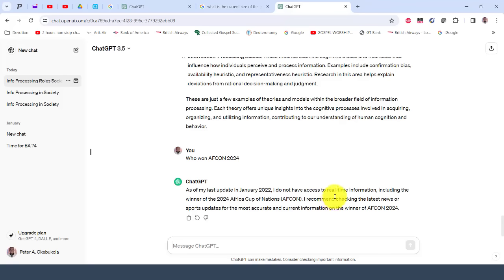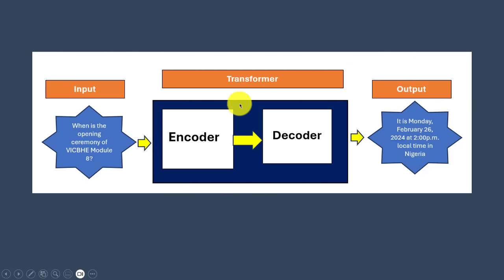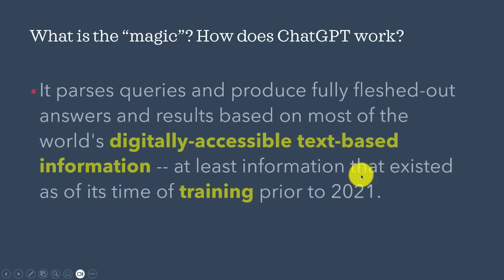Let's look at the transformer architecture. It has an input — like when we type the prompt. It goes into the encoder — there are several layers; it's a neural network. Then it goes to the decoder. This is the transformer — it transforms the whole thing — and the output is generated. For example: 'It's Monday, February 26th, 2024, at 2pm local time in Nigeria.' So what's the magic? How does GPT work?